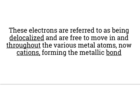The electrons are basically available to everyone and not really just to any one particular atom or pairs of atoms. These electrons are referred to as being delocalized, and they're free to move in and throughout the various metal atoms, which are now actually cations. This forms the metallic bonds — you've got electrons going in between a group of cations instead of just between one or two cations, forming this rather strange metallic bond.